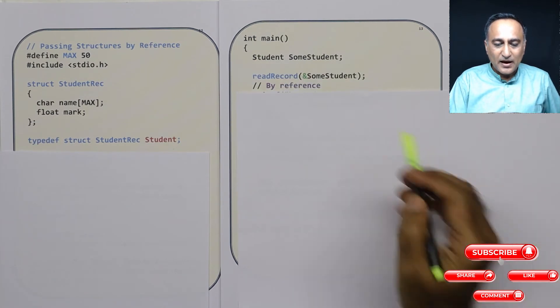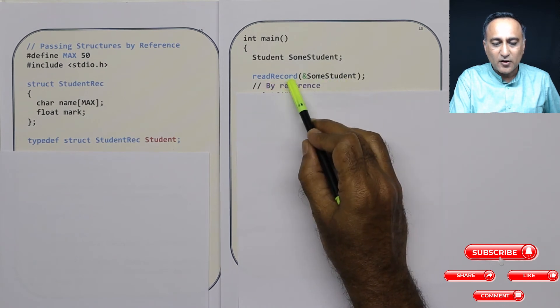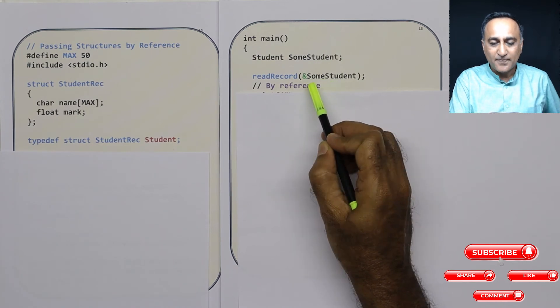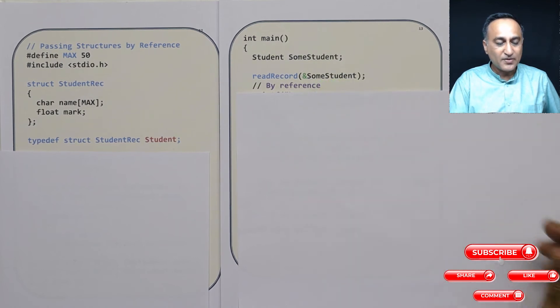So using student, some student is now a variable of this particular type having members name and marks. Now what I am doing is I am sending the address of some student to read record. I am going to read the name and marks for a particular student. So I am sending the address, not by value.